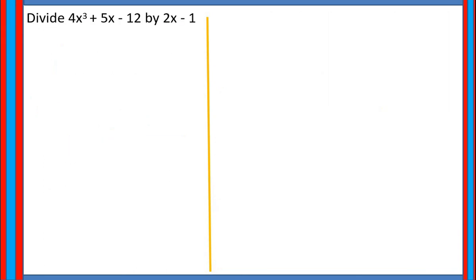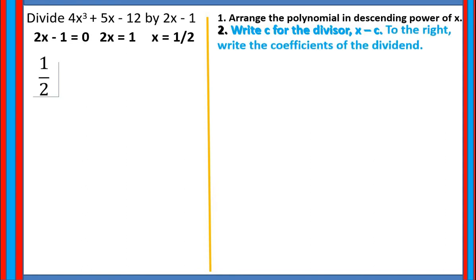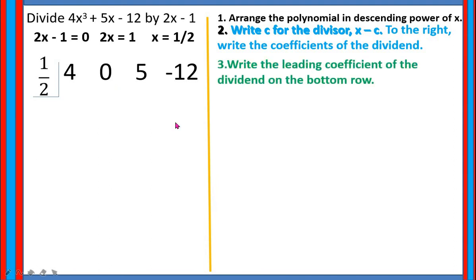Let us have another example: divide 4x cubed plus 5x minus 12 by 2x minus 1. The polynomial is already arranged in descending power of x. To find c, we equate 2x minus 1 to 0, giving 2x equals 1, so x equals 1 half. That is our value of c. To the right, we write the coefficients of the dividend 4x cubed plus 5x minus 12. Note that a 0 is added for the missing x squared term, so the coefficients are 4, 0, 5, and negative 12. Then bring down the leading coefficient 4 to the bottom row.